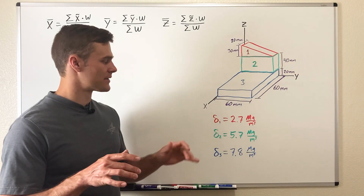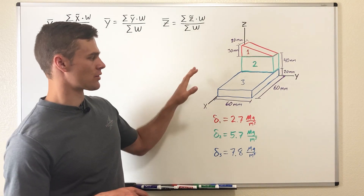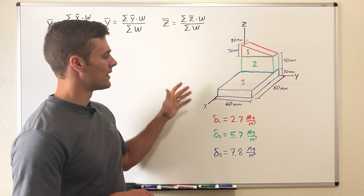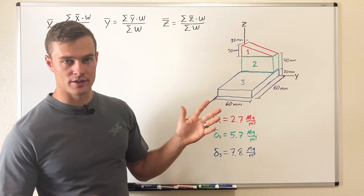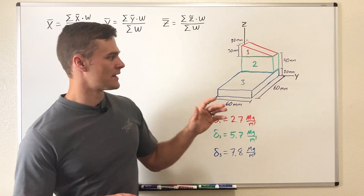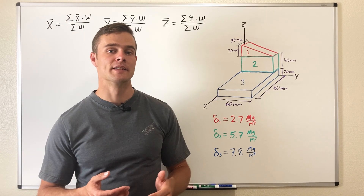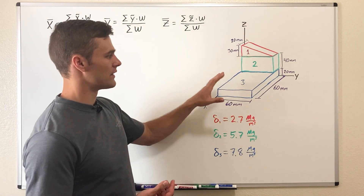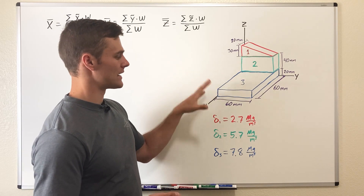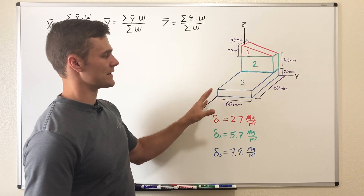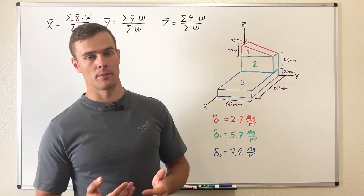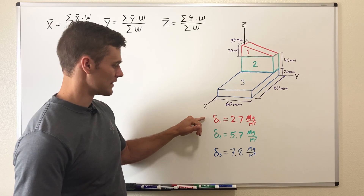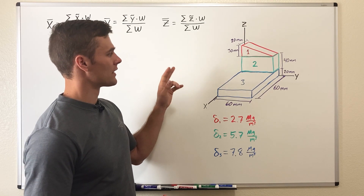The first step is to establish a coordinate system, which is already given to us in the problem. The next step is to split our object up into its component parts. Each one of these component parts needs to have the same density throughout. In this example problem each part has a different density, so it's already broken up into component parts for us, and each one of their densities is labeled.